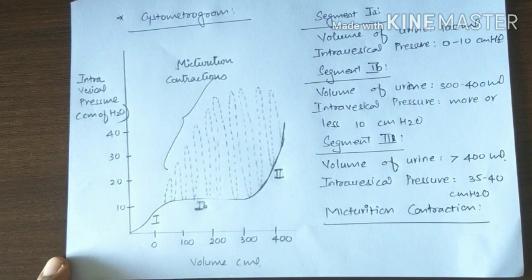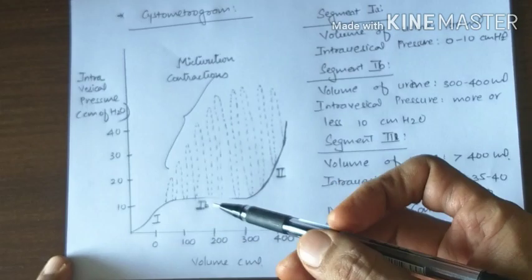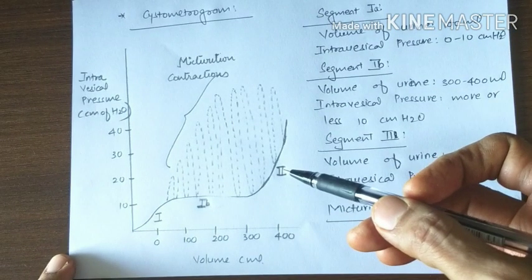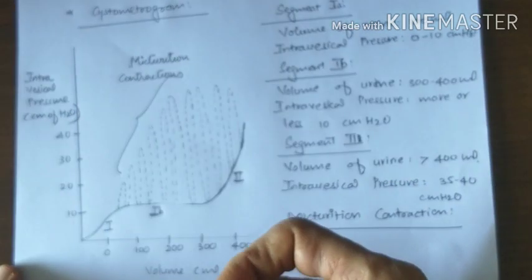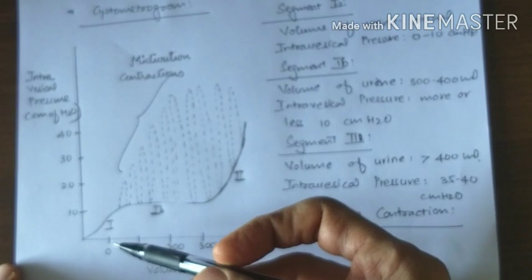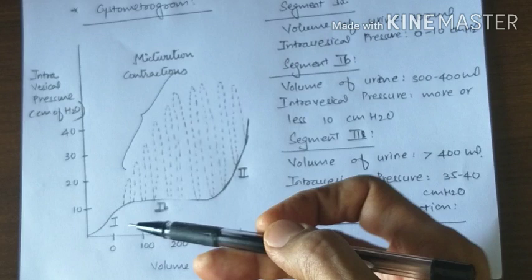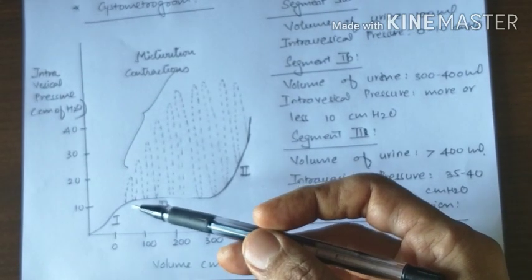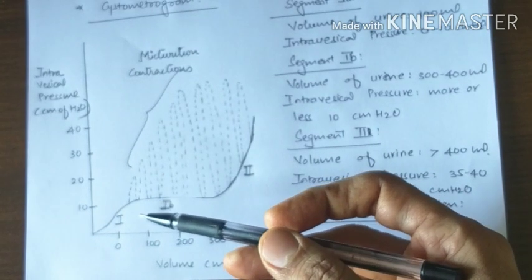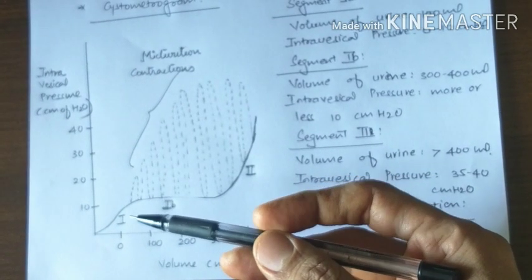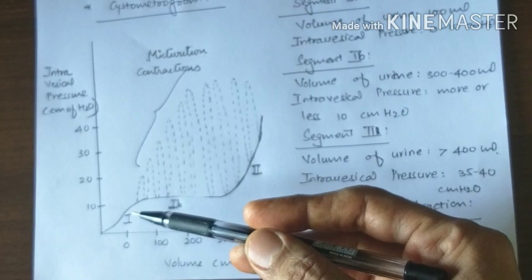Normal cystometrogram has three segments: Segment 1a, 1b, and 2. In segment 1a, the volume of fluid in the bladder rises from 0 to 100 ml. As the volume rises from 0 to 100 ml, the intravesical pressure rises from 0 to 10 cm of water.